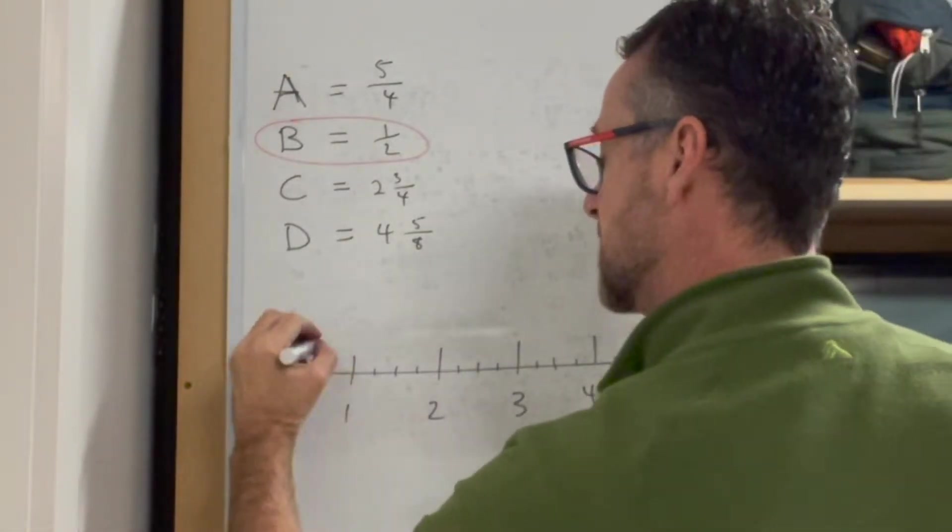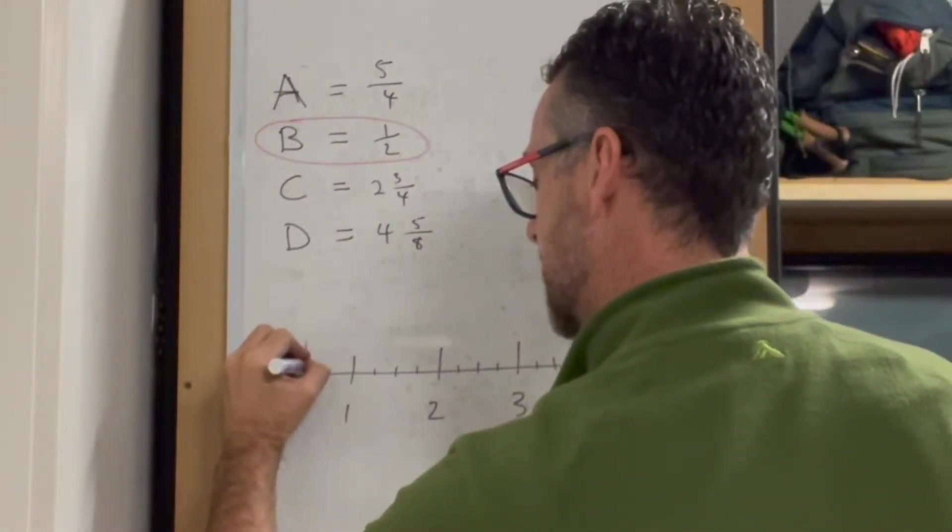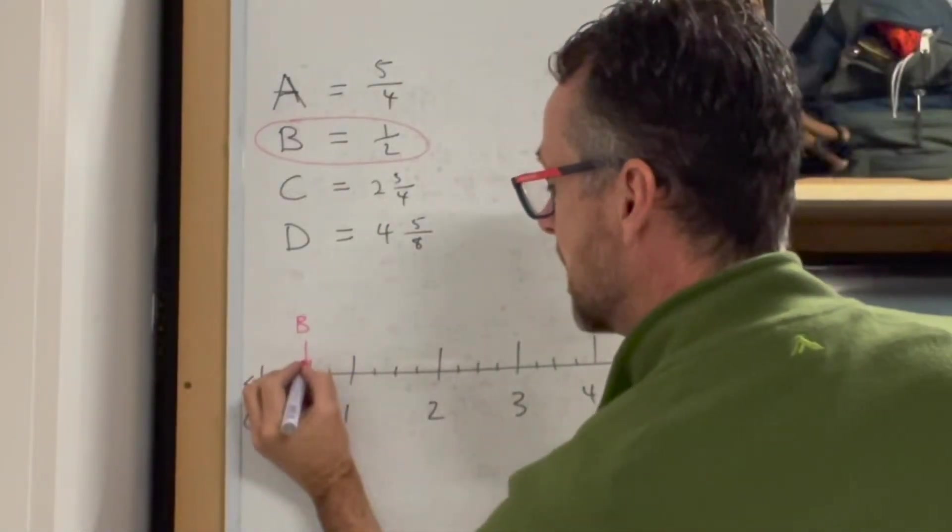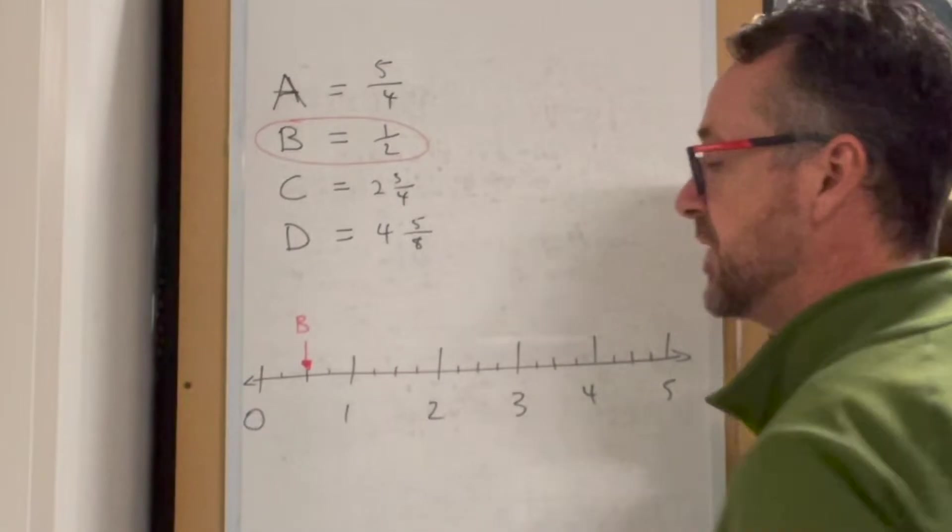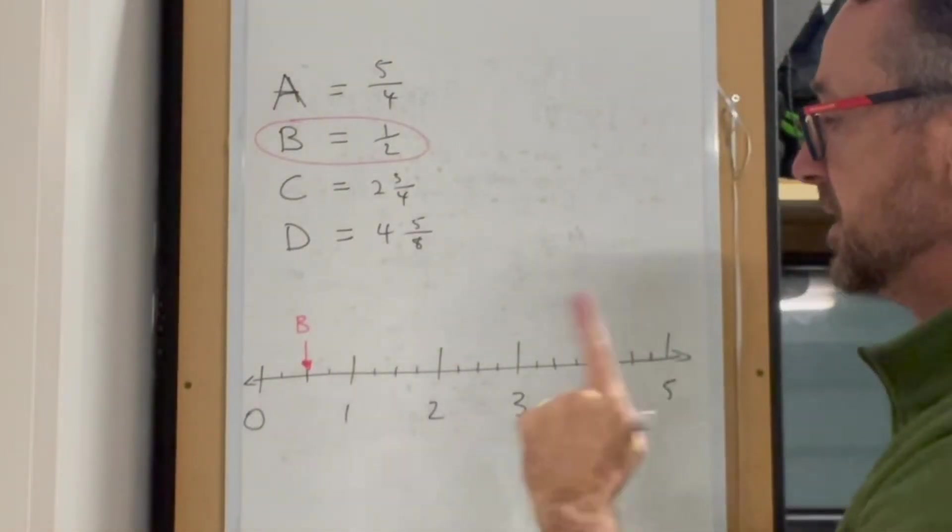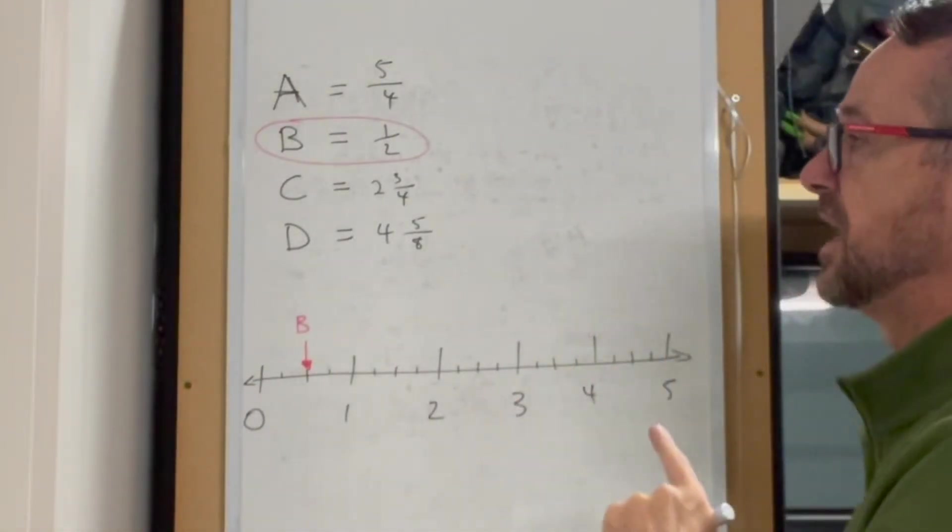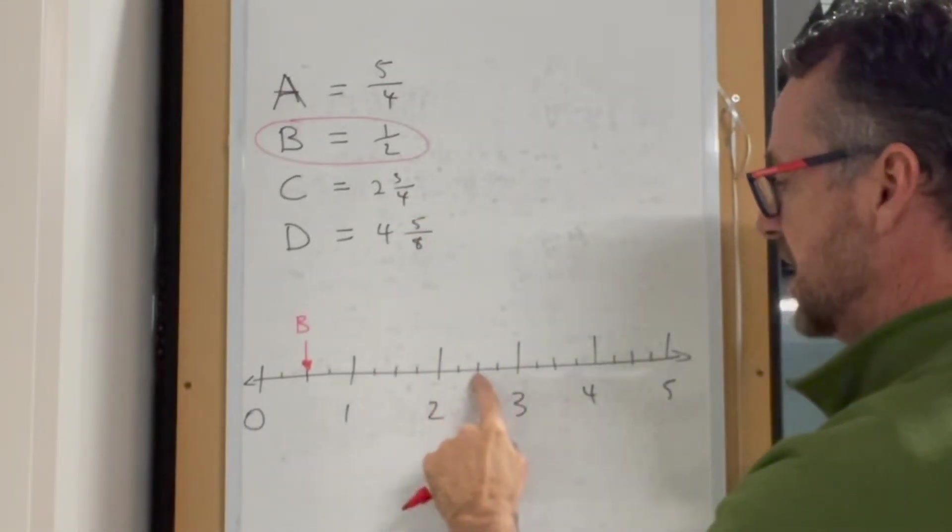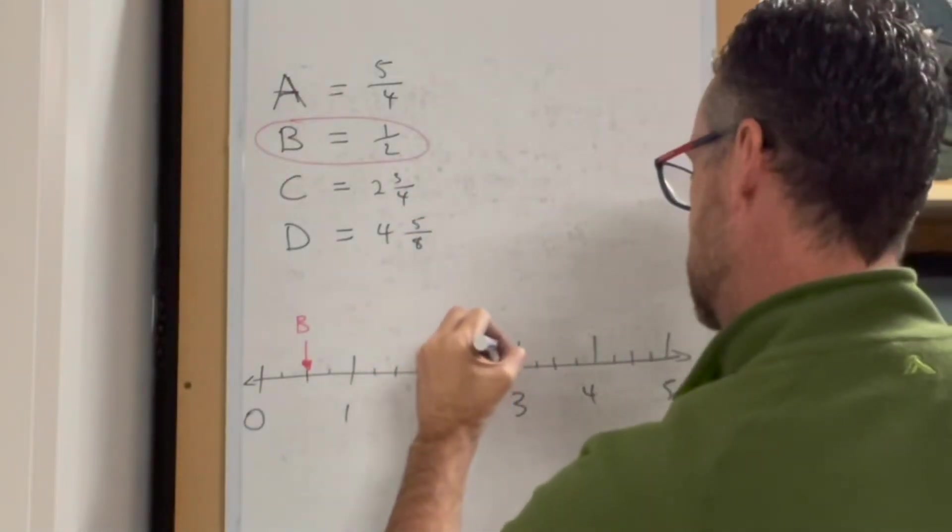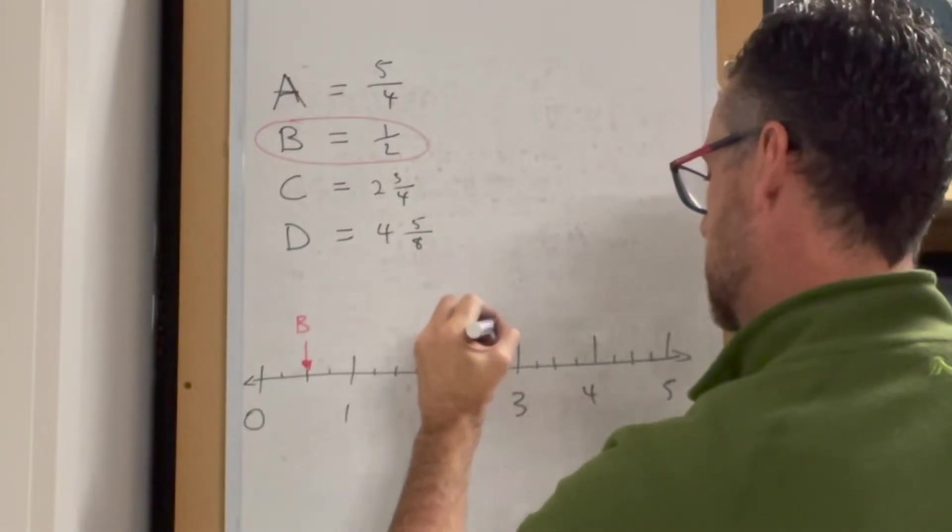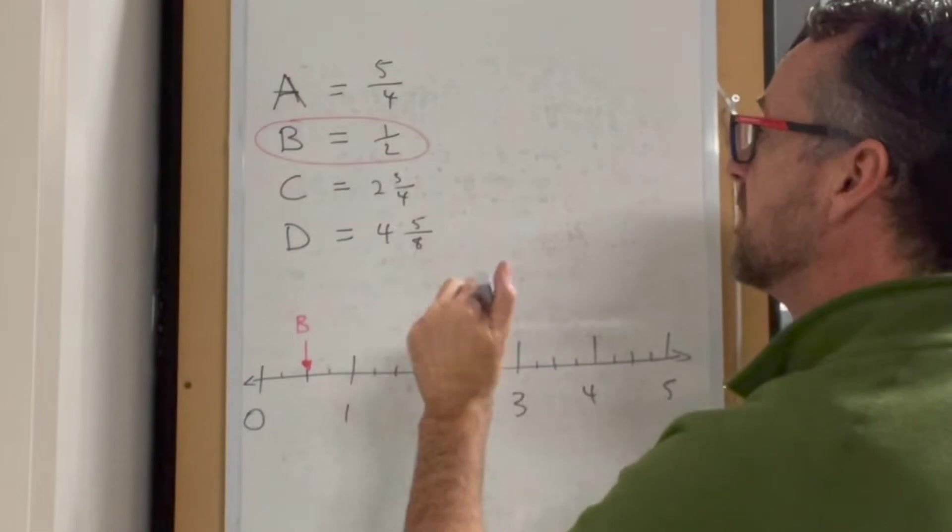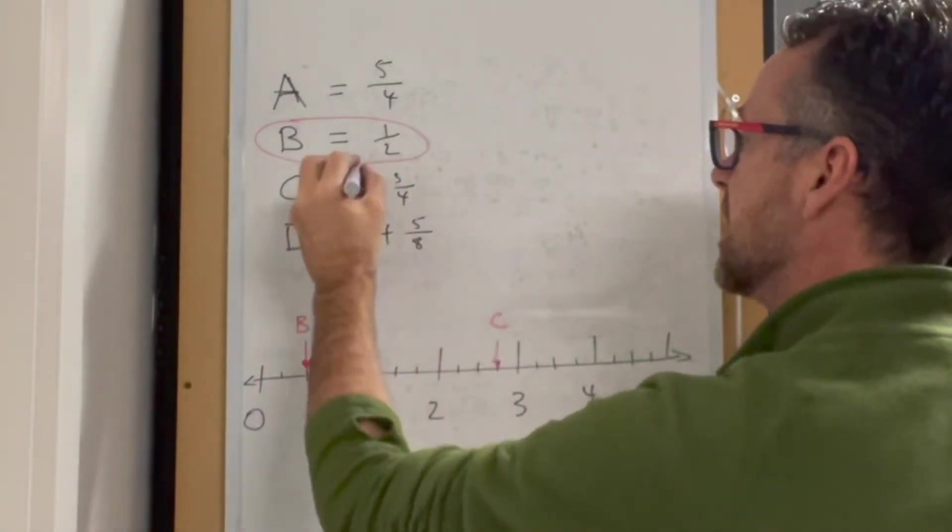Alternatively, I might do it like we've done in class with an arrow. You need to be careful that where you mark the letter gives a very accurate indication. Two and three quarters - so two and a half, two and three quarters is here. That's C.